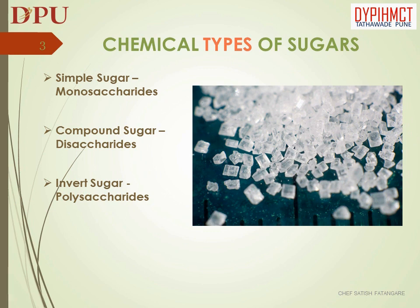Invert sugar — this is a mixture of glucose and fructose which can be made by heating a sucrose solution with an acid. These are called polysaccharides.